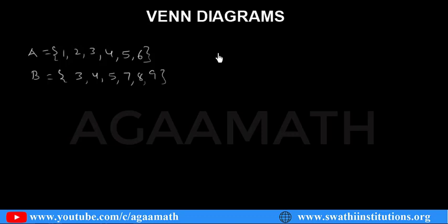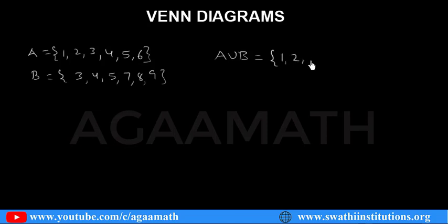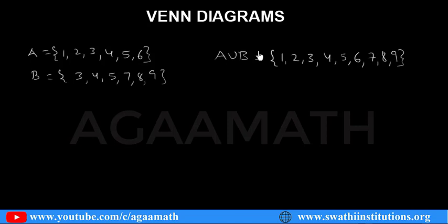Now if they ask us to find A union B, what we do is we just write the elements together of sets A and B. That is 1, 2, 3, 4, 5, 6, 7, 8, 9. So this is the way we do the operation of union.